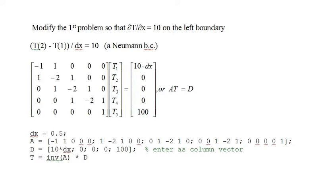Here we modify the first example to have a Neumann boundary condition on the left boundary, where the spatial derivative of temperature equals 10. The approximation to the spatial derivative on the left boundary is T2 minus T1 divided by dx, and we want that to equal 10. So the linear equation is T2 minus T1 equals 10 times dx, represented in the matrix equation as shown. Looking at the A array, the first row has a minus 1 in the column corresponding to T1 and a 1 in the column corresponding to T2, with the constant 10 times dx. At the bottom of the page is the code for setting it up; dx is specified as 0.5, the A and D matrices are entered by hand, and the solution is T equals inverse A times D.